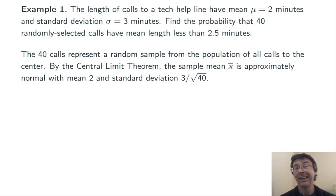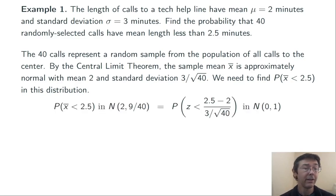We view these 40 calls as representing a simple random sample from the population of all calls to the center. And therefore, the sample mean x-bar is going to be approximately normal. It's going to have mean 2, the same as μ, and standard deviation 3 over the square root of 40, σ divided by the square root of n. So we need to find the probability of randomly getting an x-bar value that's less than 2.5 in the distribution that's normal with mean 2 and standard deviation 3 over the square root of 40.